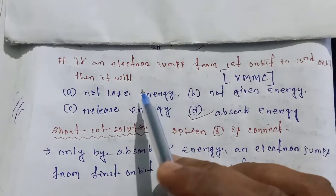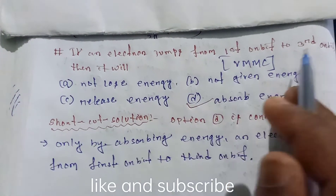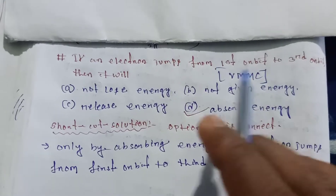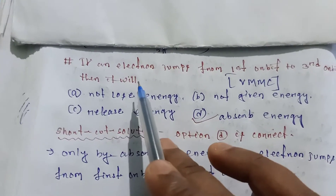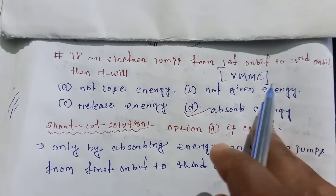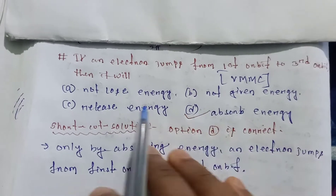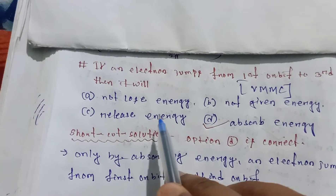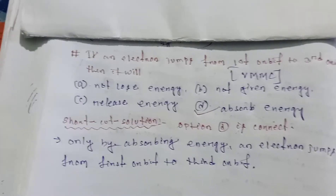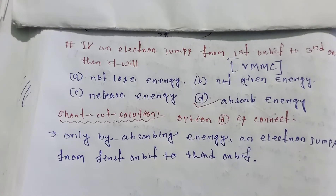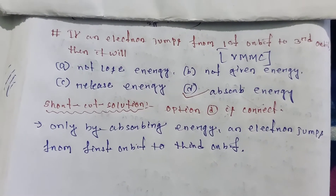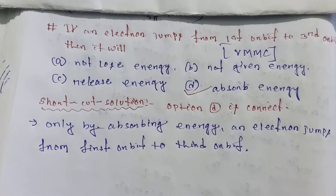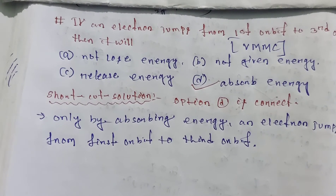If an electron jumps from the first orbit to the third orbit, what will it do? This question is from BMMC. The options are: not lose energy, not give energy, release energy, or absorb energy. The correct answer is absorb energy — the electron absorbs energy when it jumps from the first orbit to the third orbit.